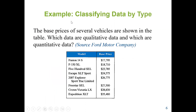Now let's start with an example — classified data by type. The base price of several vehicles are shown in the table below. Which data are qualitative and which are quantitative? We can see that all the prices are numerical values — quantitative. And the models are labels and names — so they will be qualitative.